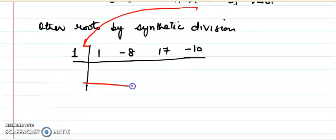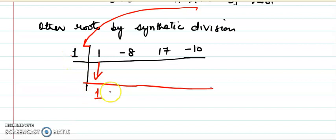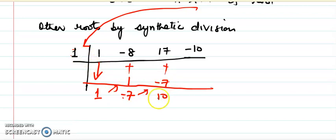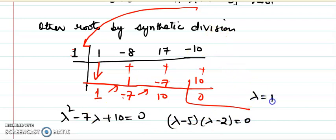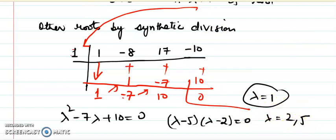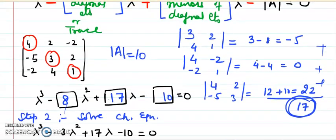The resulting quadratic from synthetic division is lambda squared minus 7 lambda plus 10 equals zero, which factors as (lambda minus 5)(lambda minus 2) equals zero. So the three eigenvalues are lambda equals 1, 2, and 5.